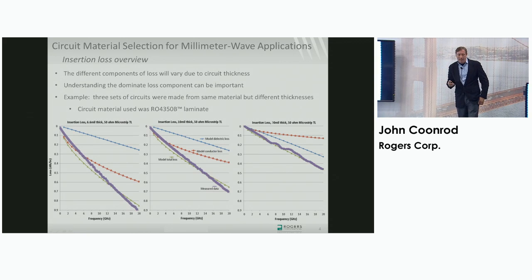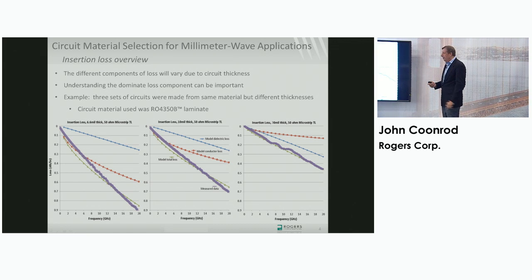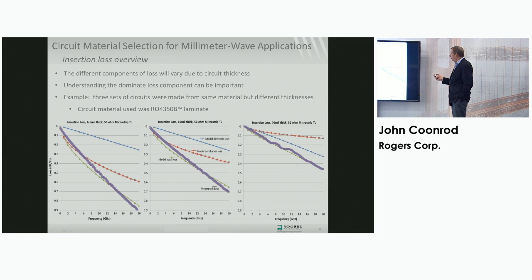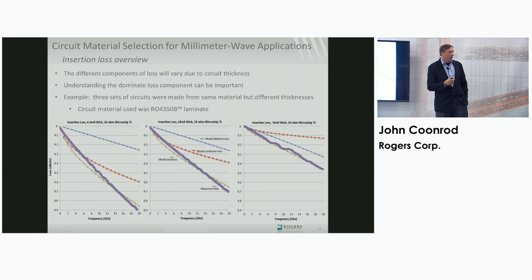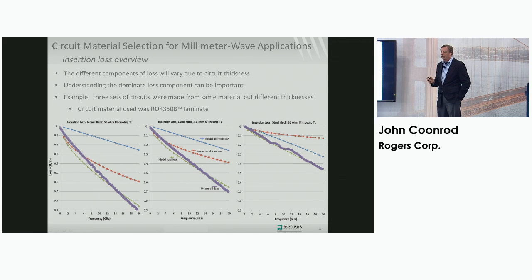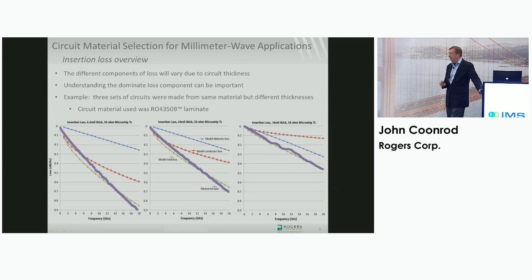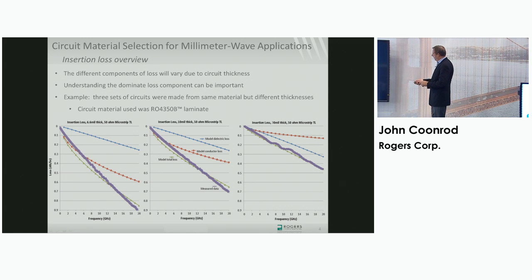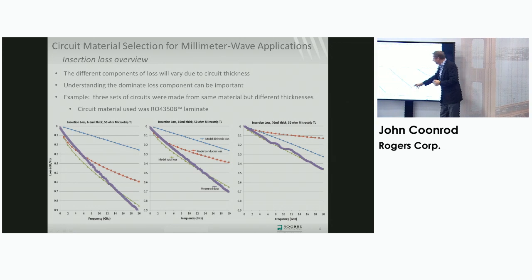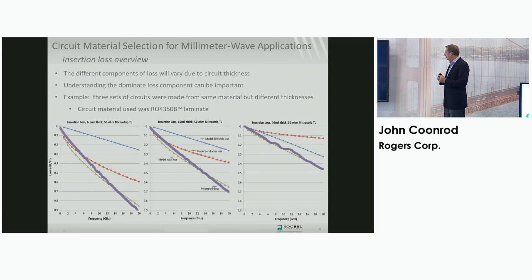This chart shows how the different components of loss are dominated by the thickness of the substrate. I've measured three different sets of circuits using the exact same material — all 4350B — at different thicknesses: the chart on the left is 6.6 mil thick, the middle is 10 mil thick, and the right is 30 mil thick. All are 50 ohm microstrip transmission line circuits. Let's start with the middle chart, which has the legend.